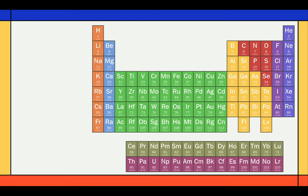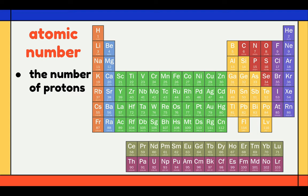The periodic table is arranged in a grid format. Each element sits in a specific place in the grid according to its atomic number. The atomic number is the number of protons in an element that defines its position in the periodic table.